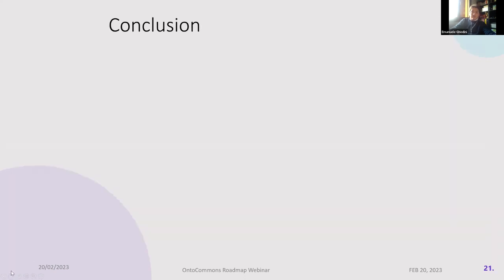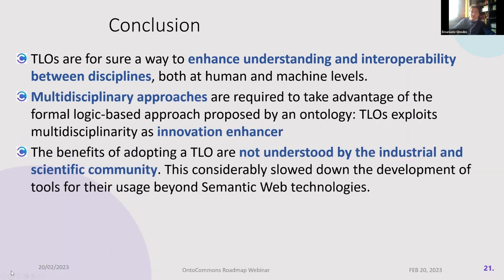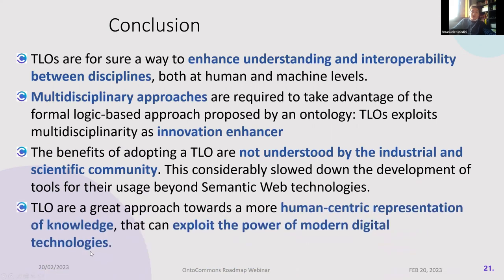In conclusion, top-level ontologies are a way to enhance understanding and interoperability between disciplines at both human and machine levels. The multidisciplinary approaches used in ontologies can be an innovation and answer for industry. The benefits of adopting a top-level ontology are not yet well understood by the industrial and scientific community, and top-level ontology is a great approach toward a more human-centric representation of knowledge that can exploit the power of modern digital technologies.